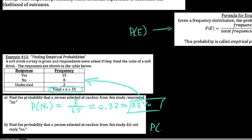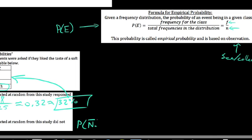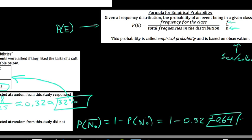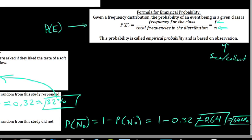How about we find the probability that the person selected at random from the study did not reply no. So probability no bar, the complement of no, would be the same thing as 1 minus the probability that they did say no, using our formulas for complements. We say 1 minus the 0.32 that we just found. So the probability that they actually did not say no was about 64% of the respondents.